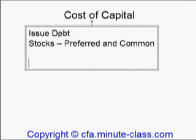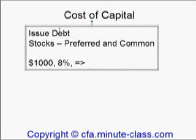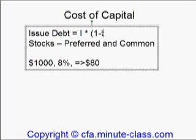Let's look at debt first. When you issue debt, besides only liability, you also have to pay interest to the debt holder. So intuitively, we will say that the interest rate is the cost of the debt. For example, if I issue $1,000 and the interest rate is 8%, then I will know that I have to pay $80 per year to the debt holder. So the cost of the debt is 8%. But in reality, since the company has to pay tax if they make profits, the cost of the debt is not just equal to I, which is the interest rate.